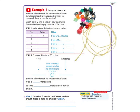So go ahead and flip over to 450. And here on 450 we're going to compare measures. It says Emma has 4 feet of thread. She needs 50 inches of thread to make some bracelets. How can she determine if she has enough thread to make the bracelets?